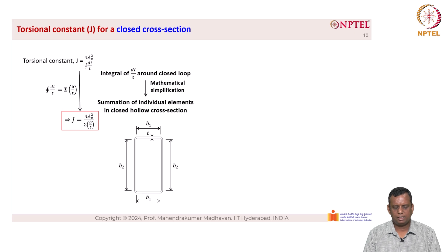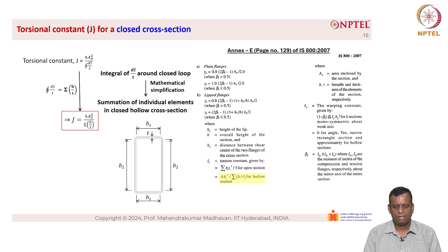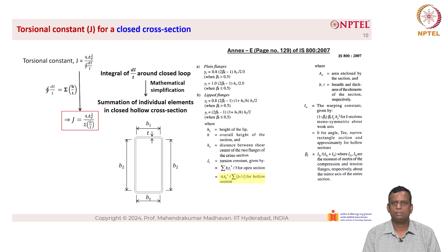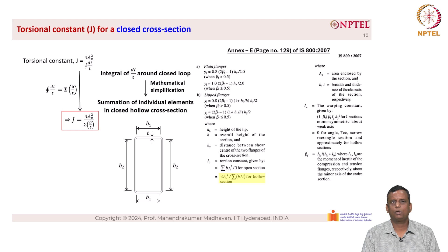For a hollow cross section with depth B₂ and width B₁ and thickness T, this is evaluated per Annexure E of page 129 of IS 800 as: J = 4A_e²/∮(b/T) for hollow sections. It is noted that IS 800 uses the symbol It for torsional constant, but most textbooks use J, which is more uniformly accepted. Also, it is 'torsional constant,' not 'torsion constant' as given in the code. Similarly, I_W is labeled as warping constant in the code, but correctly it is the warping torsional constant. With this, we complete the class. Thank you very much.